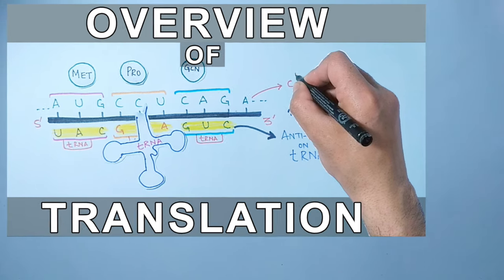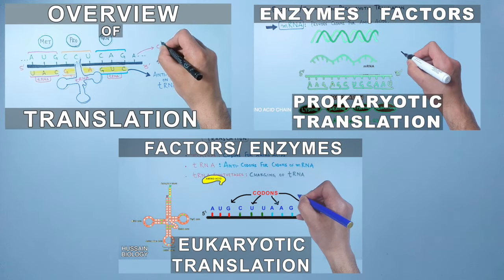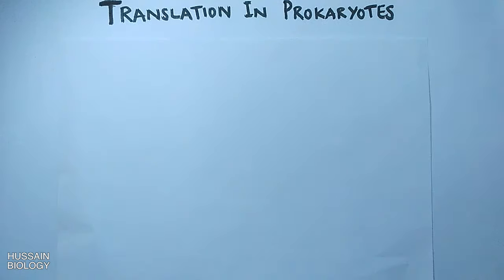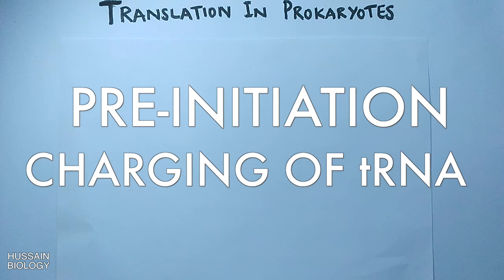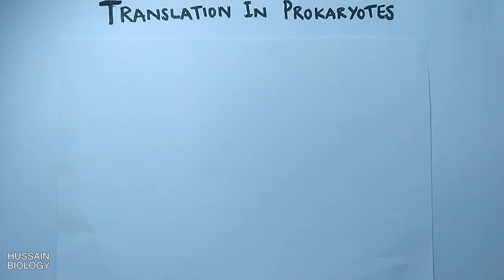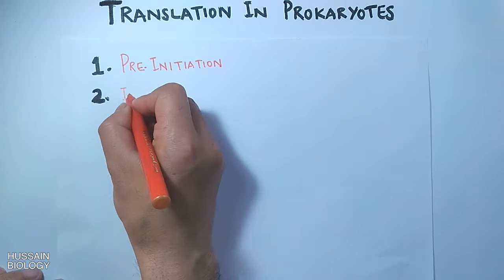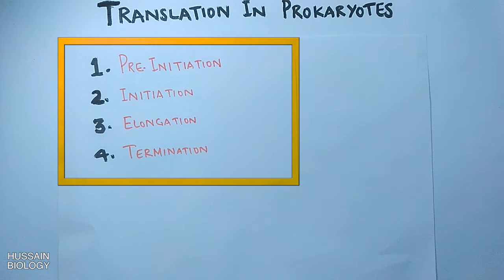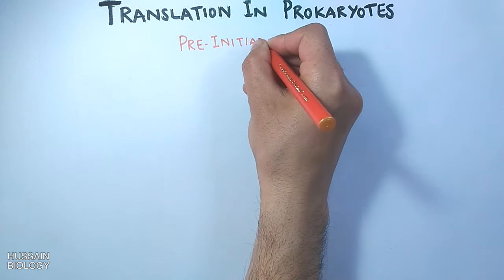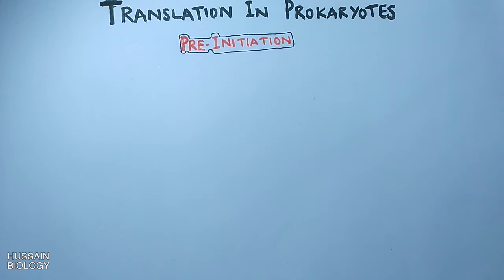In this series of videos we have been discussing translation basics like enzymes and factors in translation, for which the link is given in the description. In this video we'll be discussing translation in prokaryotes in detail, where we will explain the pre-initiation step first. We divide translation into four steps: pre-initiation, initiation, elongation, and termination. Here we will be discussing the pre-initiation step — the step before the actual translation starts.